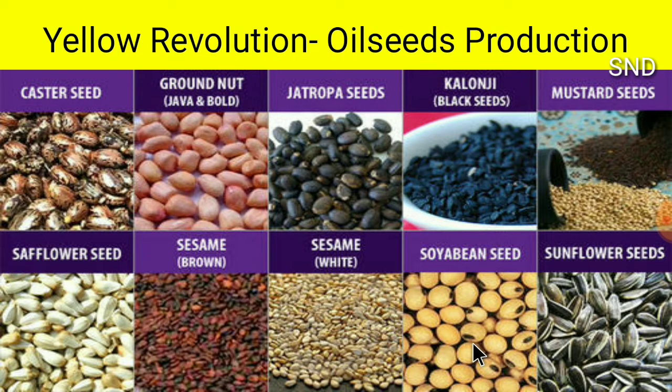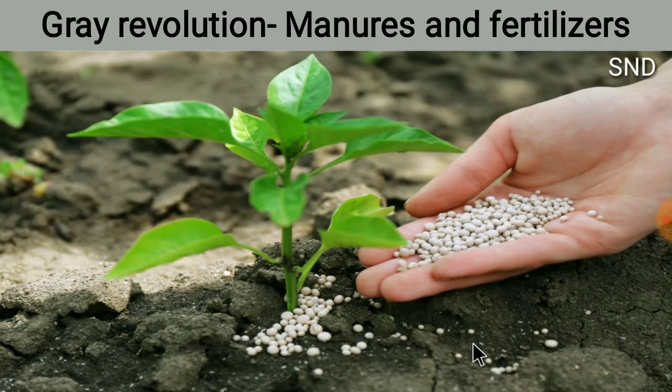Yellow Revolution is related with oil seeds production. Gray Revolution is related with the production of manures and fertilizers used in agriculture.